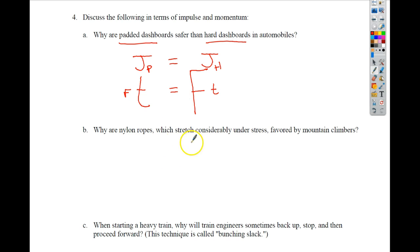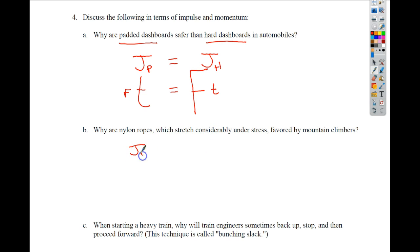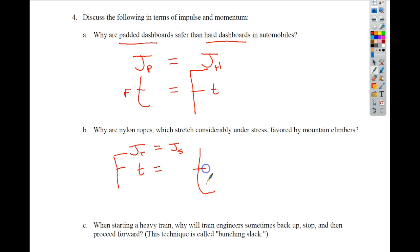Why are nylon ropes, which stretch considerably under stress, favored by mountain climbers? It's the same principle. If the rope is really tight and non-stretching, the time of impact is really small, meaning the force on your body would be huge. But with a stretchy rope, the rope stretches, increasing the time of impact, which allows the force to be really small — since the impulse is the same for both.